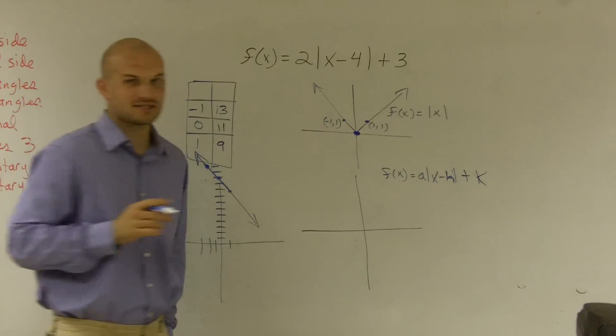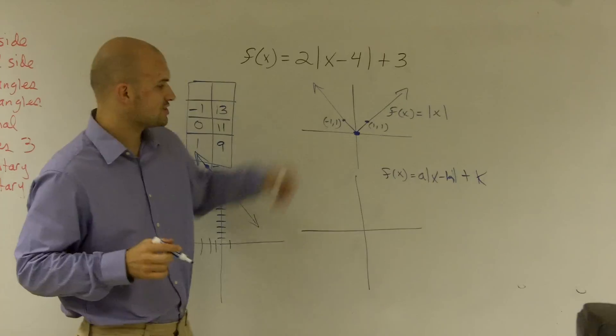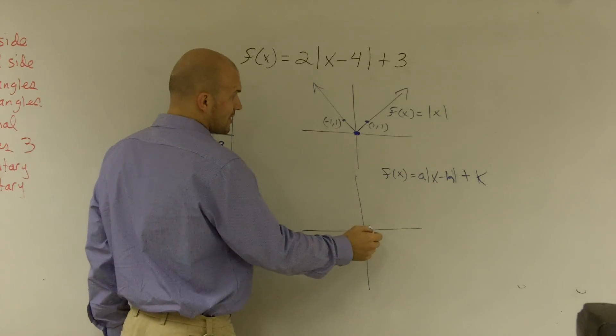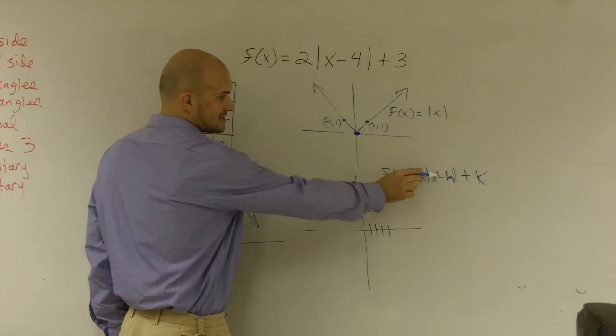So if originally, without any alterations, I have my vertexes at 0, 0, if I go ahead and alter this now, I'm going to shift 4 units to the right, 1, 2, 3, 4, right? That's good.